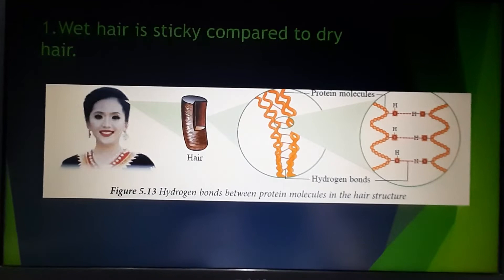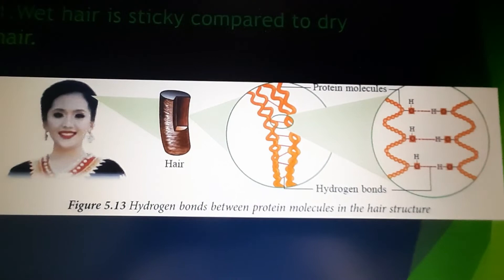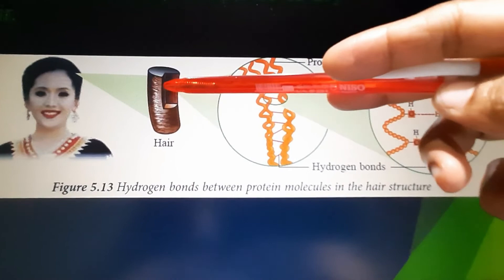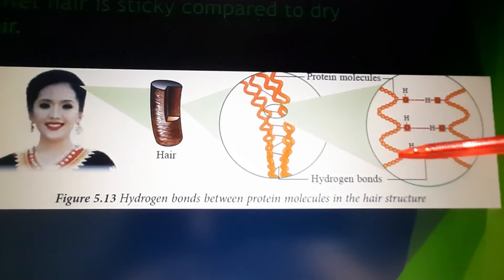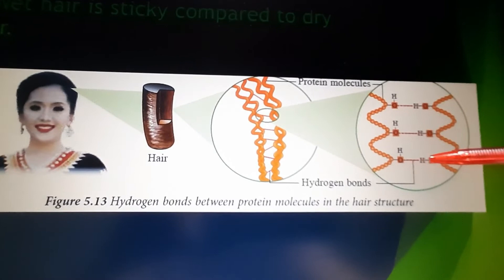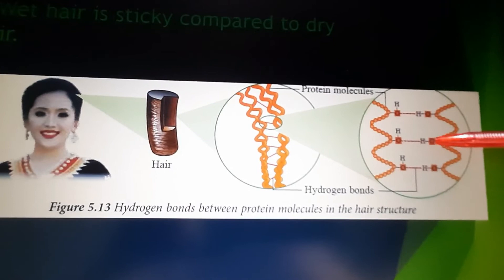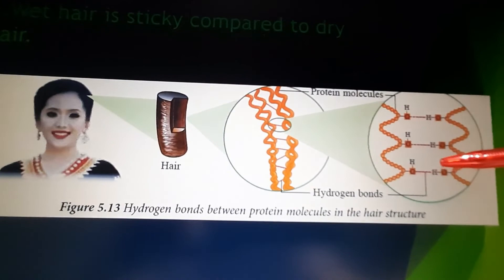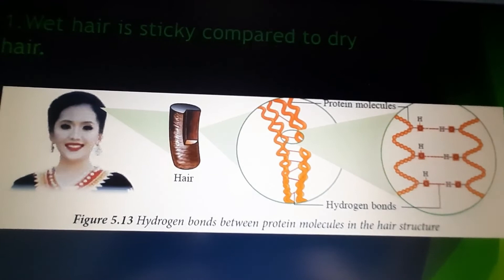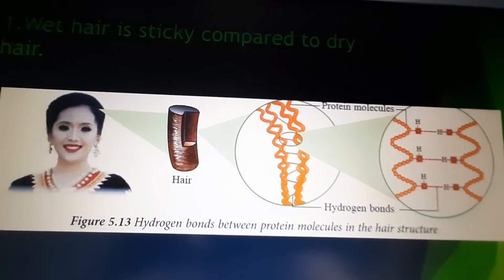Now let's look at the role of hydrogen bonds in daily life. Why is wet hair sticky compared to dry hair? The keratin layer — the outer layer of hair — consists of polar molecules. When hair is wet, the polar keratin molecules tend to form hydrogen bonds with water molecules. Due to these hydrogen bonds between the water molecules and the keratin molecules, the hair becomes sticky. When the hair is dry, there is no hydrogen bonding, so the keratin layer is not sticky.